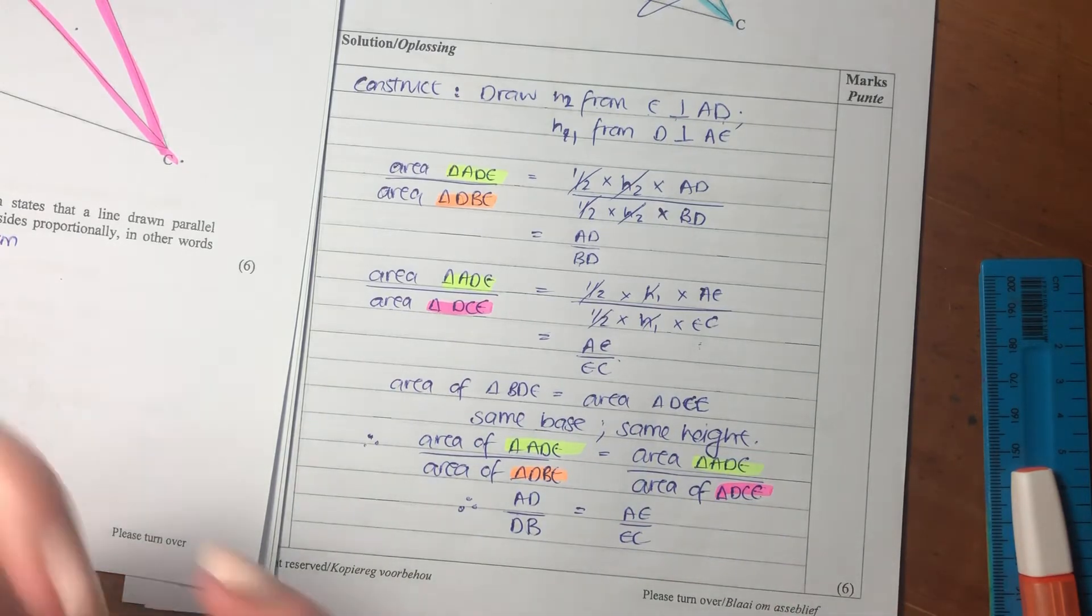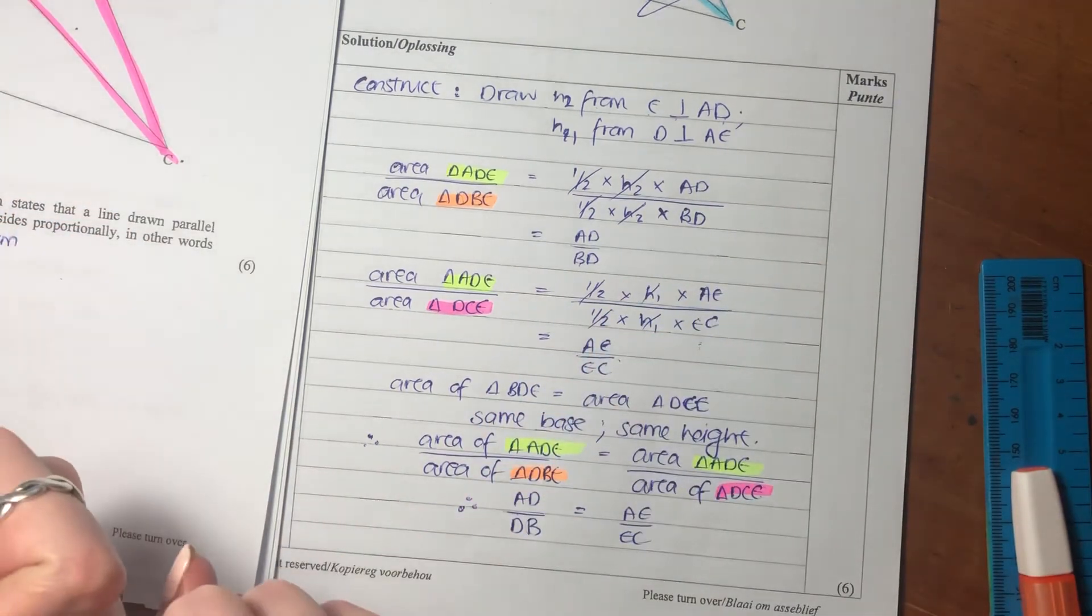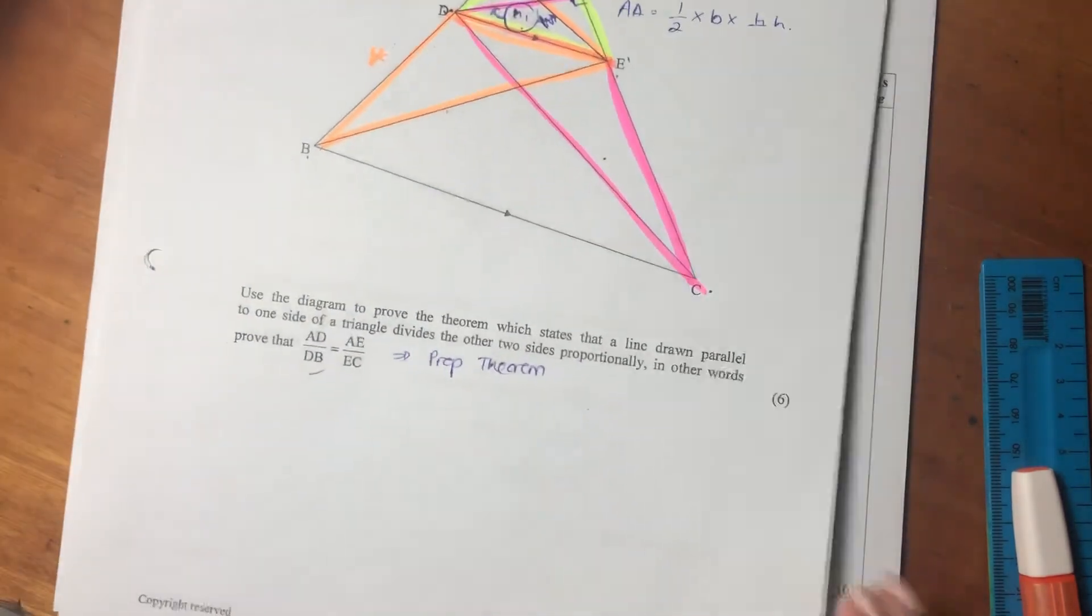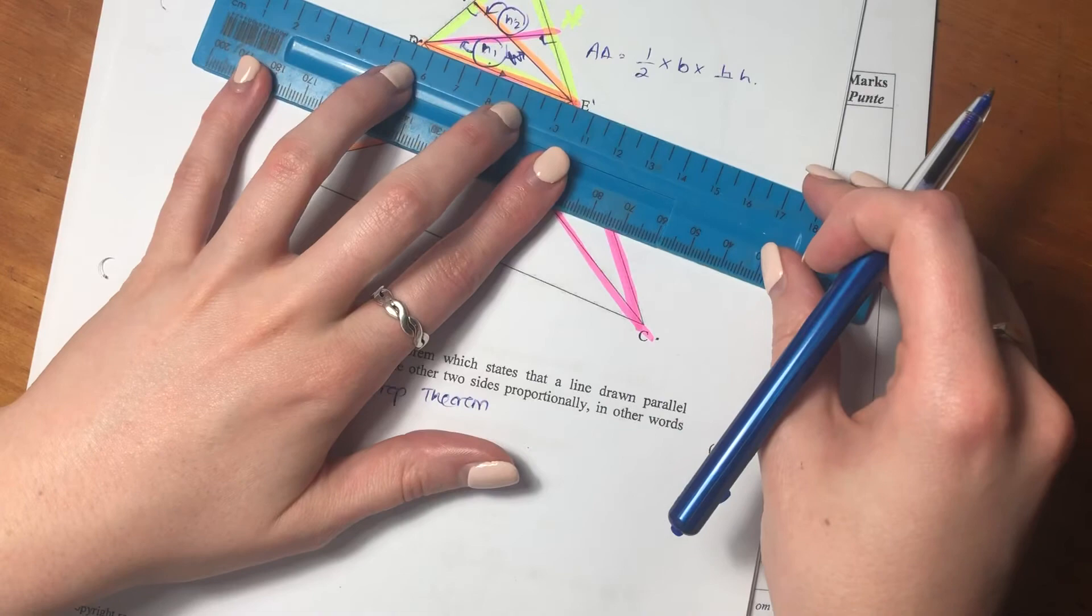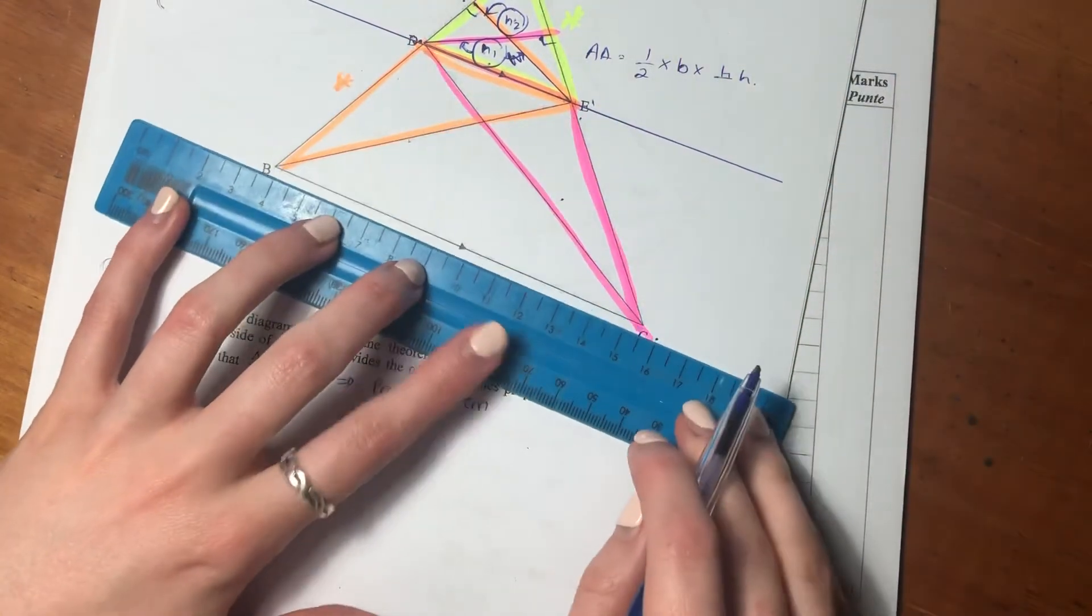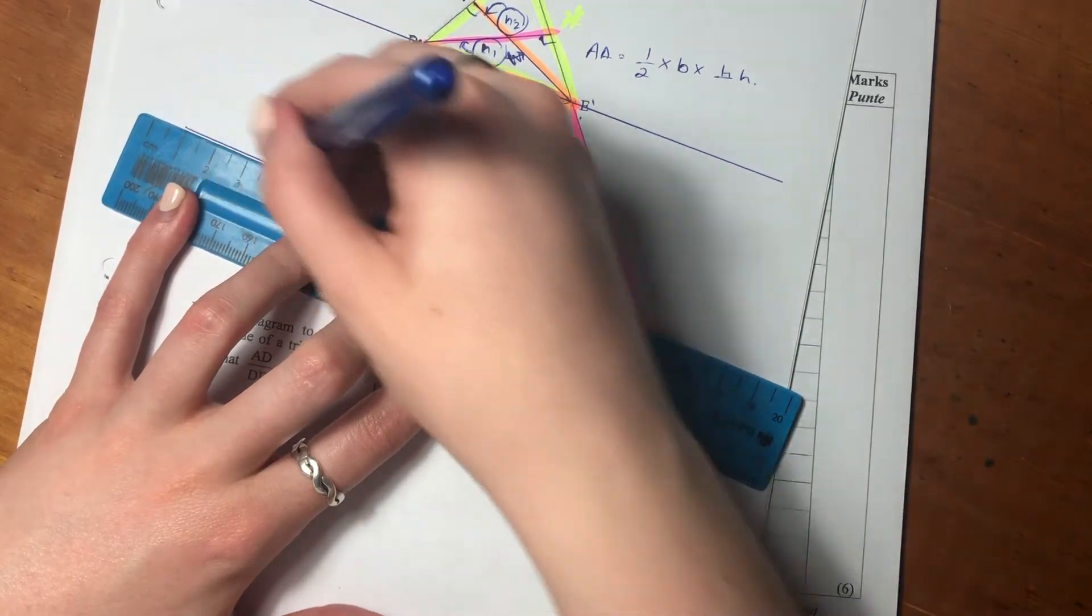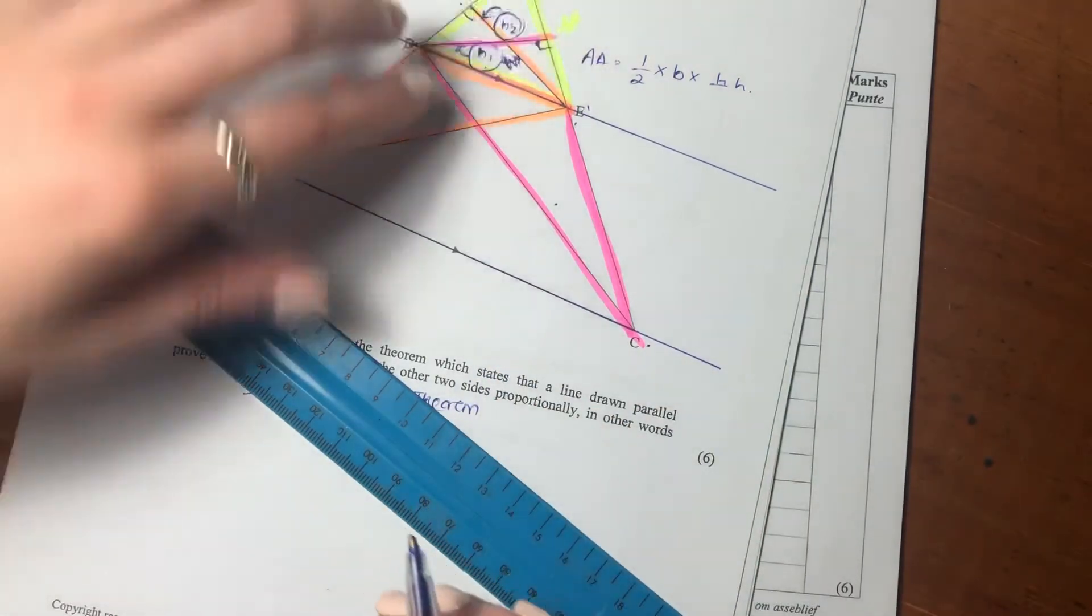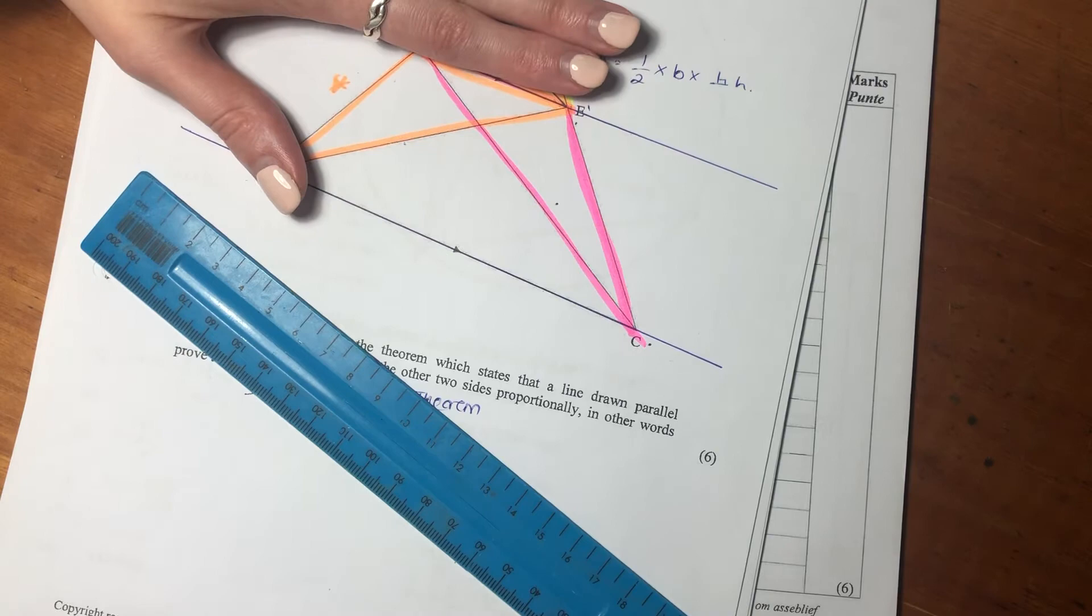But now you're saying, okay, that's all good and well, so you've got these two different sides of the equation which I've asked you to look at, but how do you know those two things are equal? So let's go and look again at these two triangles. So what I'm going to do is I'm just going to extend my parallel lines, because we're going to need to do a little bit of a look at them.